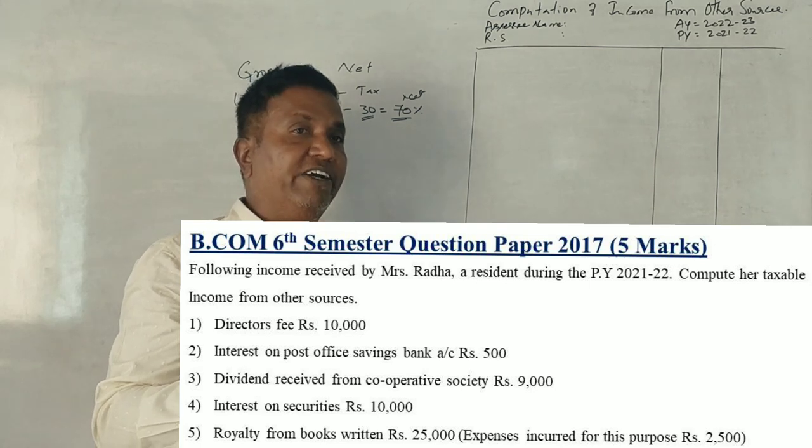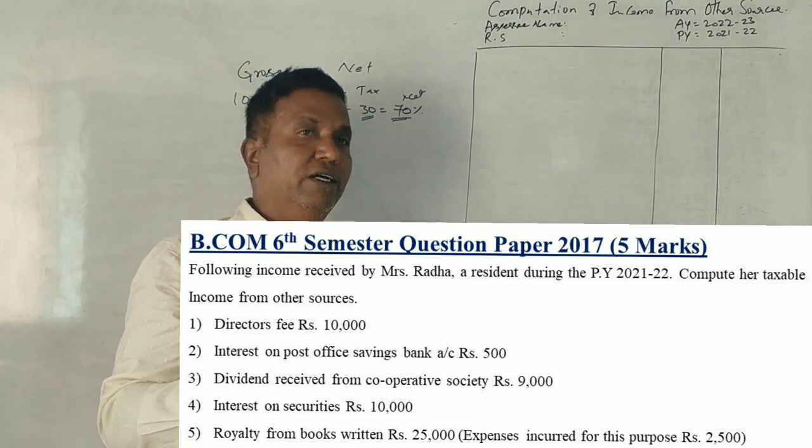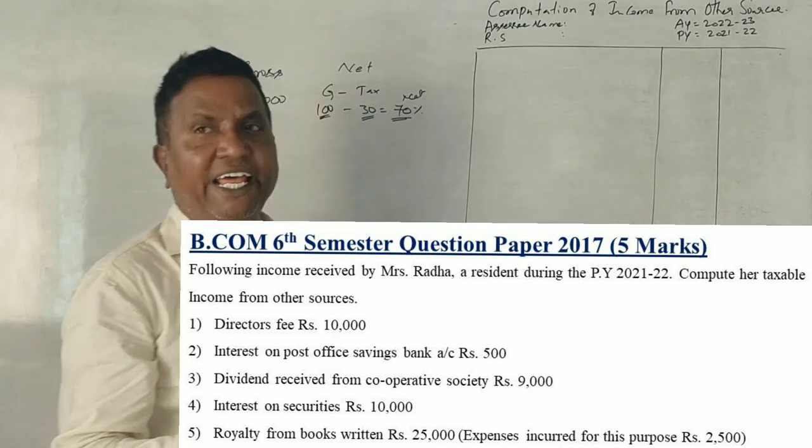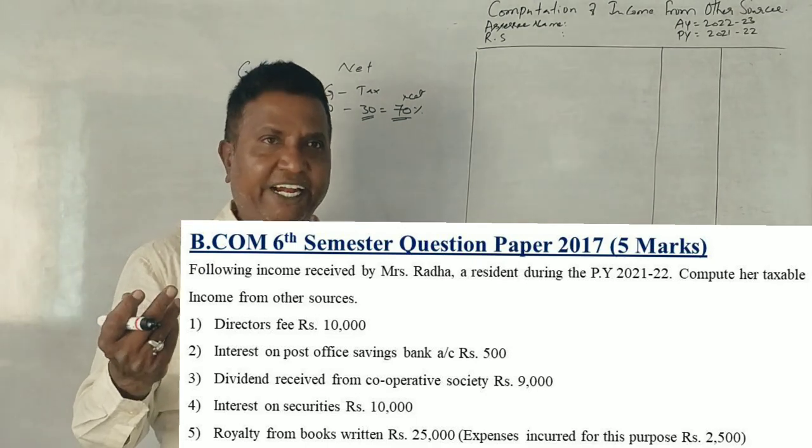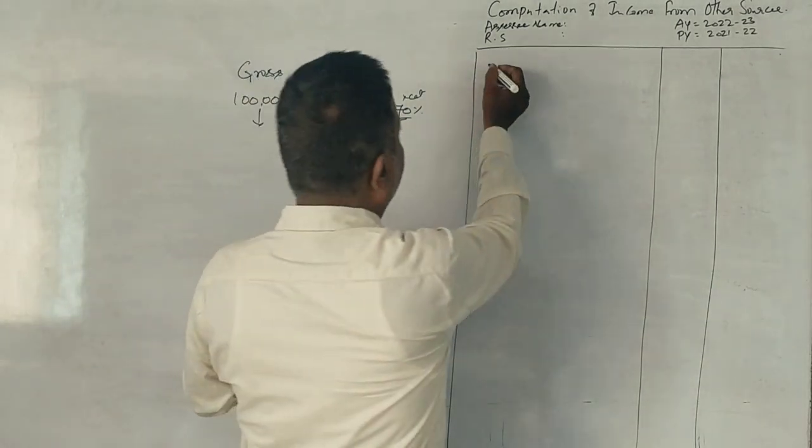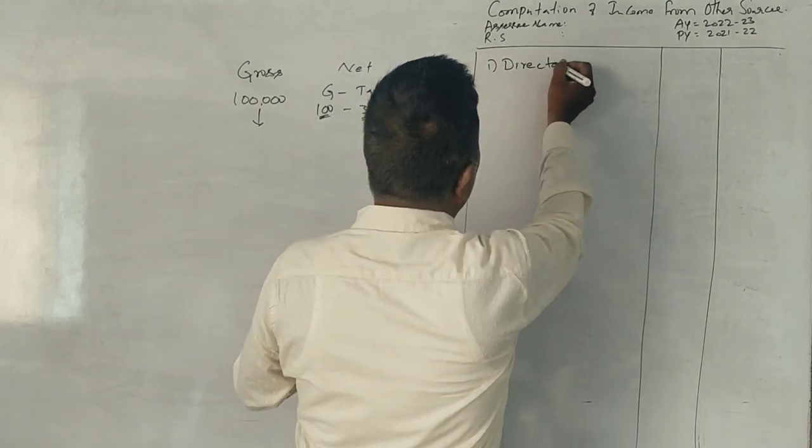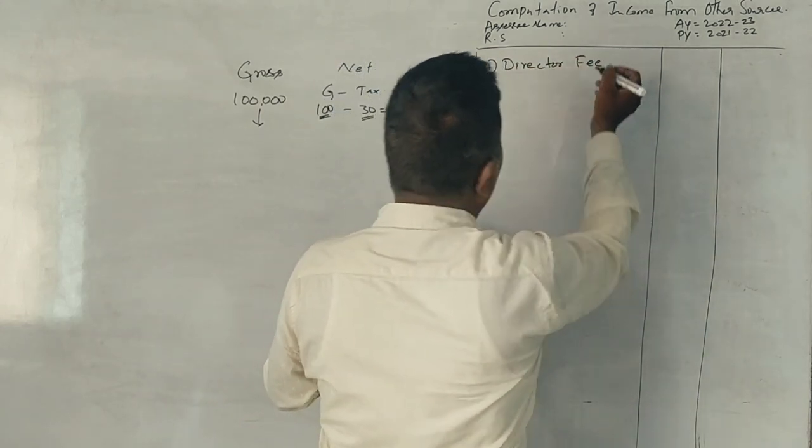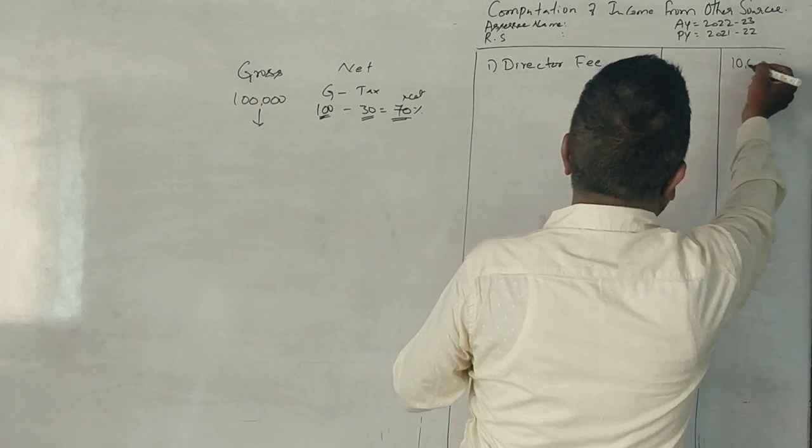Six question, 2017. Did you got it? Yes, okay. See, director's fees. Director fee is a taxable income from other sources. So, director fee, you see the part? 10,000.